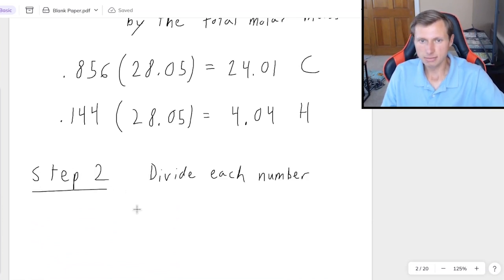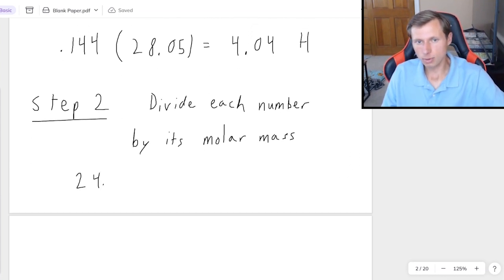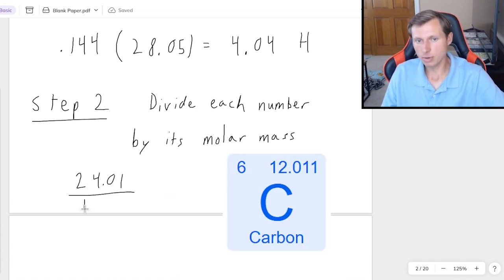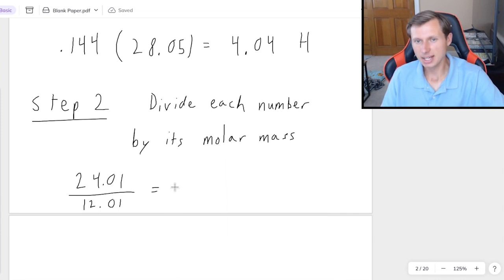And then just one more step, and we're done already. Step two, divide each number by its molar mass or atomic weight. So for carbon, 24.01. If I look at the periodic table, the molar mass of carbon is 12.01. And so when I divide that, I get 1.999, which essentially rounds to two. So in other words, I know this compound is going to have two carbons.